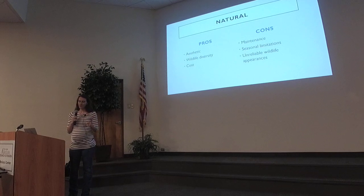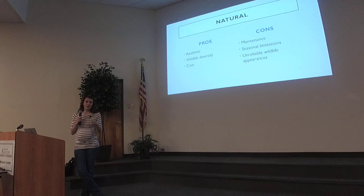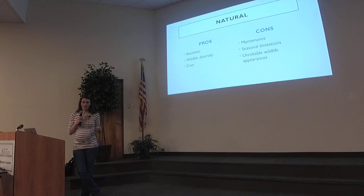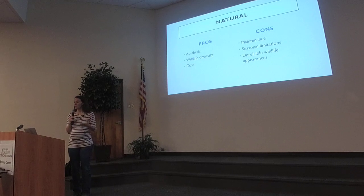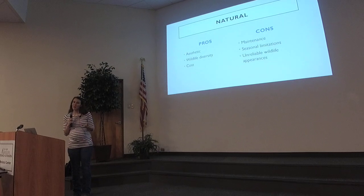There are also seasonal limitations — plants are only going to produce flowers, fruit, nuts, or other parts that animals eat at certain times of year. So wildlife is only going to come in if that source is available. Especially during years of drought, those plants may still produce flowers or fruit, just not a whole lot.